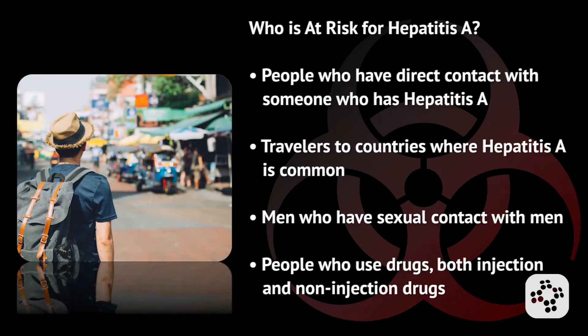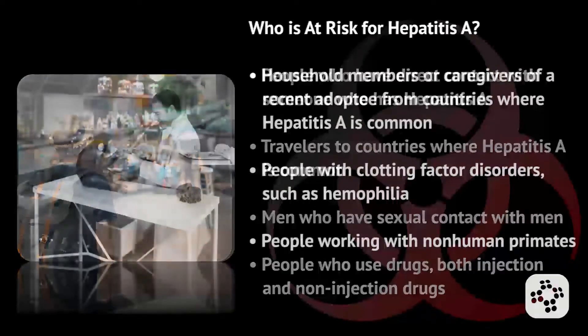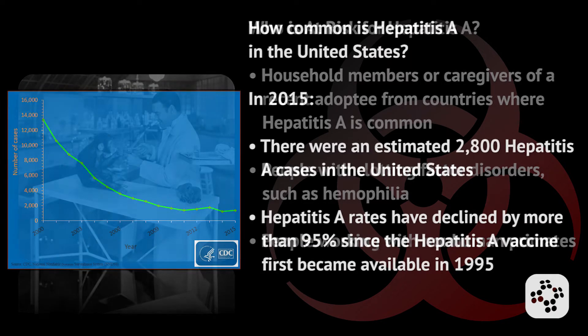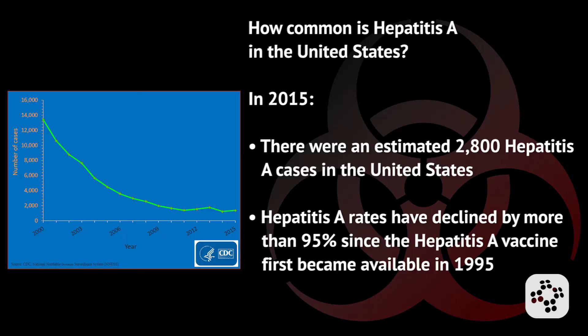So who's at risk for Hepatitis A? People who have direct contact with someone who has Hepatitis A, travelers to countries where Hepatitis A is common, men who have sexual contact with men, people who use drugs both injection and non-injection, household members or caregivers of a recent adoptee from countries where Hepatitis A is common, people with clotting factor disorders such as hemophilia, and people working with non-human primates.